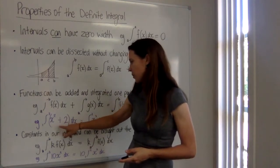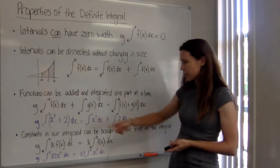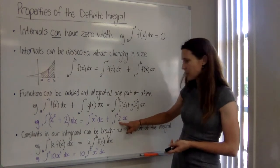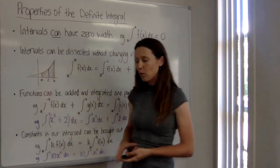So there's an example here. If we've got x squared plus 2 dx, it would be the same as if we just integrated the x squared and just integrated the 2. And that's because the bounds are the same. That's important.